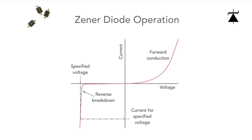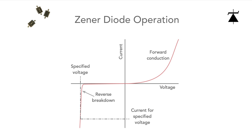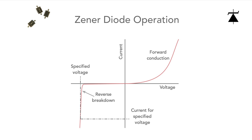Here we see the curve for the Zener diode. It has a normal forward voltage characteristic as seen in other diodes, but when we look at the reverse characteristics, we see the sharp breakdown area. Because this is very sharp and well-defined, we can use this as a voltage reference.